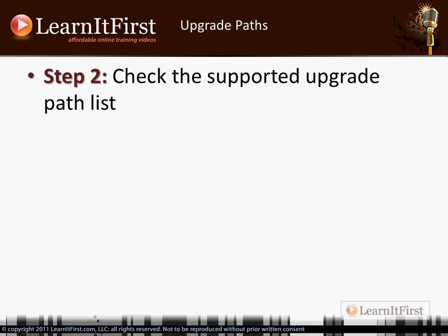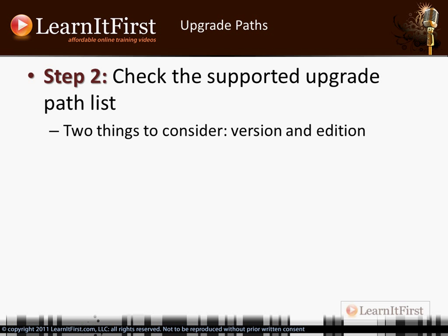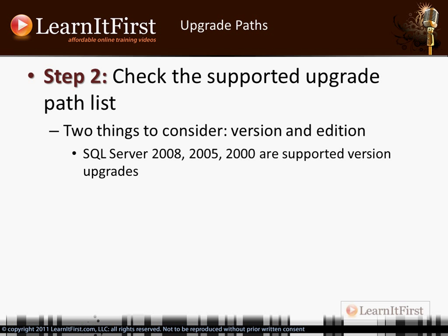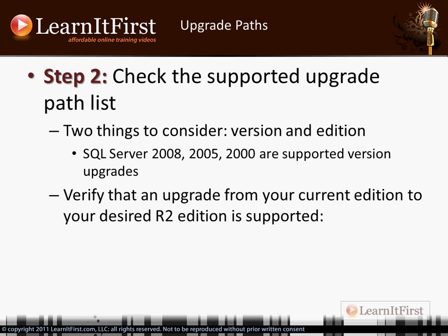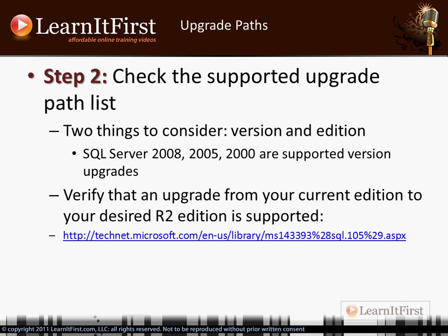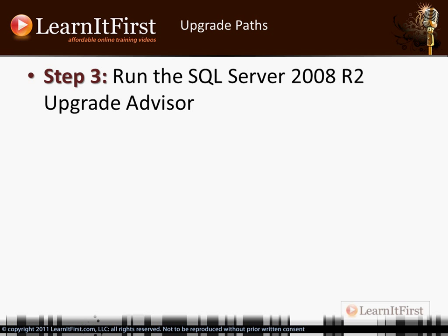We need to talk about two things: version and edition. We talked about the versions that are supported for a direct upgrade, but what about the edition? For example, what if you want to go from Enterprise Edition of SQL 2008 to Standard Edition of SQL Server 2008 R2? There is a document that walks you through whether your edition is supported as a direct upgrade. Also, run the Upgrade Advisor — pick up on any identified issues. It will always report something back to you, so fix what's necessary. A lot of what it reports isn't critical, so it's good just to be aware.